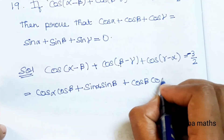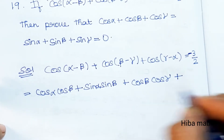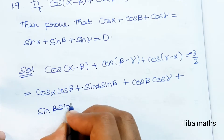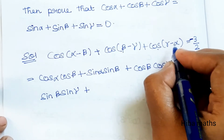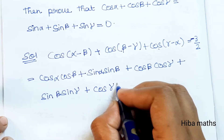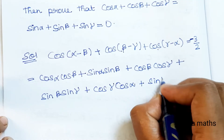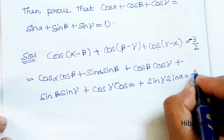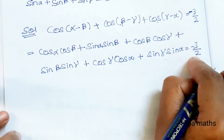Expanding: cos α cos β + sin α sin β + cos β cos γ + sin β sin γ + cos γ cos α + sin γ sin α is equal to -3/2.